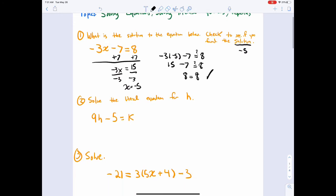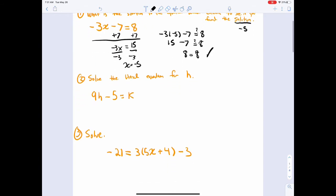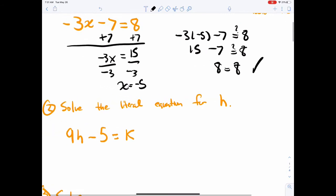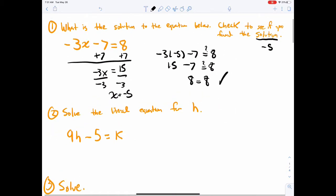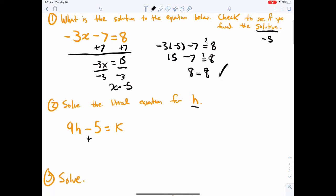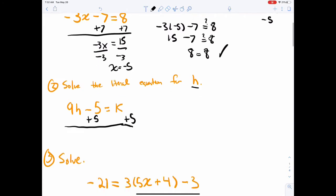Okay, number two here, solve the literal equation for h. So you'll notice here what looks a little different, there's two letters now, but you're gonna solve it the same way as you did number one. We're gonna solve for h. H is like the x. So let's add 5 to both sides, we want to get h by itself. What you do to one side you do to the other to maintain equality.